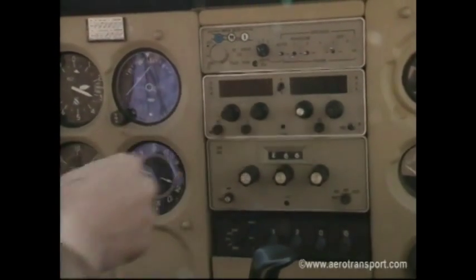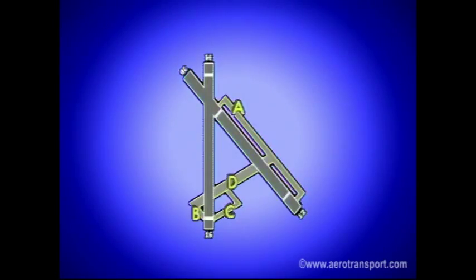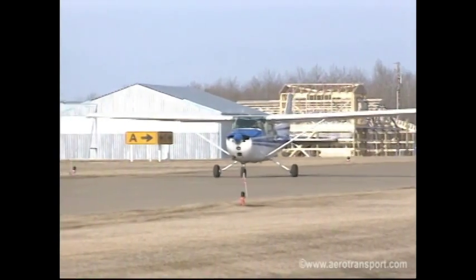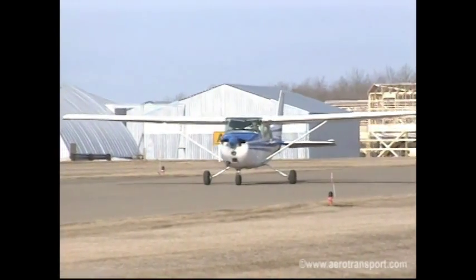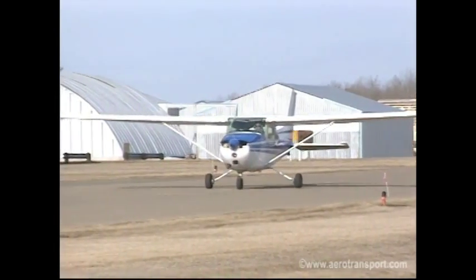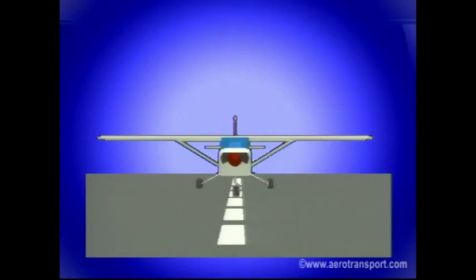At all controlled and some uncontrolled airports, taxiways are identified by names from the phonetic alphabet — Alpha, Bravo, Charlie, Delta, Echo, and so on. At smaller, less complex airports they may be identified by numbers. Airports with only one taxiway may have no special identifier at all.